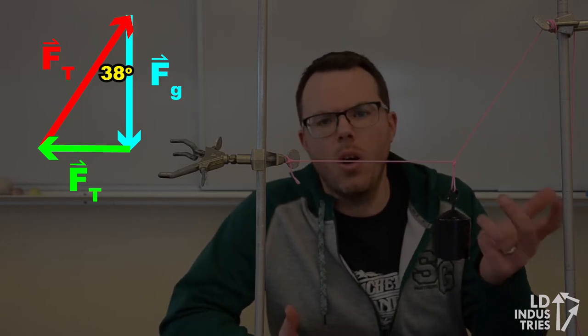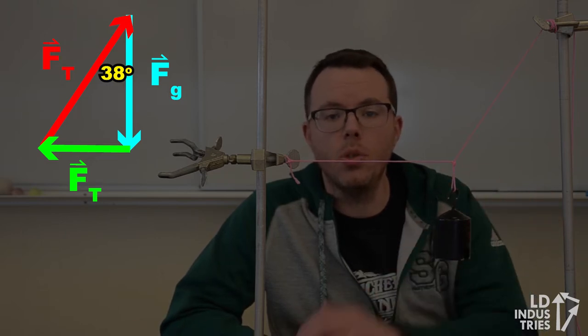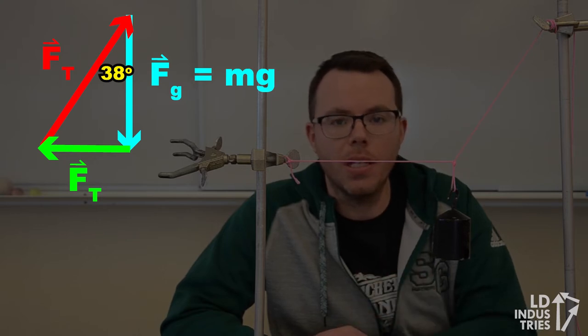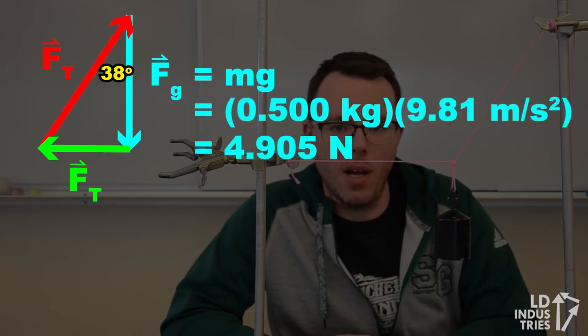In this case, it's 500 grams or half a kilogram. So I can use Newton's second law. Force of gravity equals m, the mass of the object, times g, the acceleration due to gravity. I can put in one other side of the triangle.